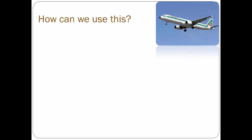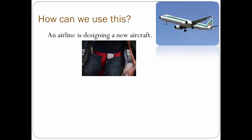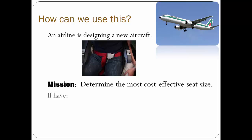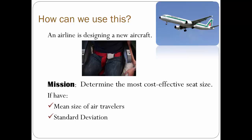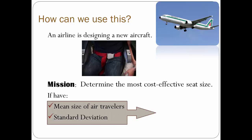Another example: an airline designing a new aircraft is looking at seat size. The average economy seat width is 17.8 inches. They want to accommodate most passengers cost-effectively. If they know the mean size of air travelers and the standard deviation from a sample, they can design seats accordingly. To accommodate about 68% of passengers, they would design seats based on the average size plus or minus one standard deviation. To accommodate about 95%, they would use two standard deviations from the mean.